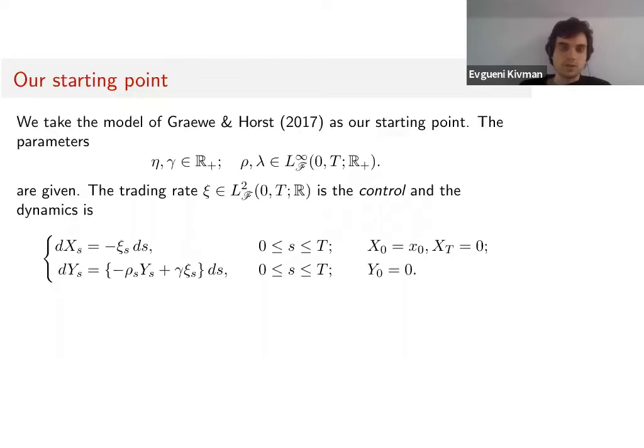Because we are selling into the limit order book, the price changes, and this is the dynamics of this effect. Gamma is a limit order book parameter, and rho is the resilience rate—if we don't trade, the price impact recovers over time and starts at zero.